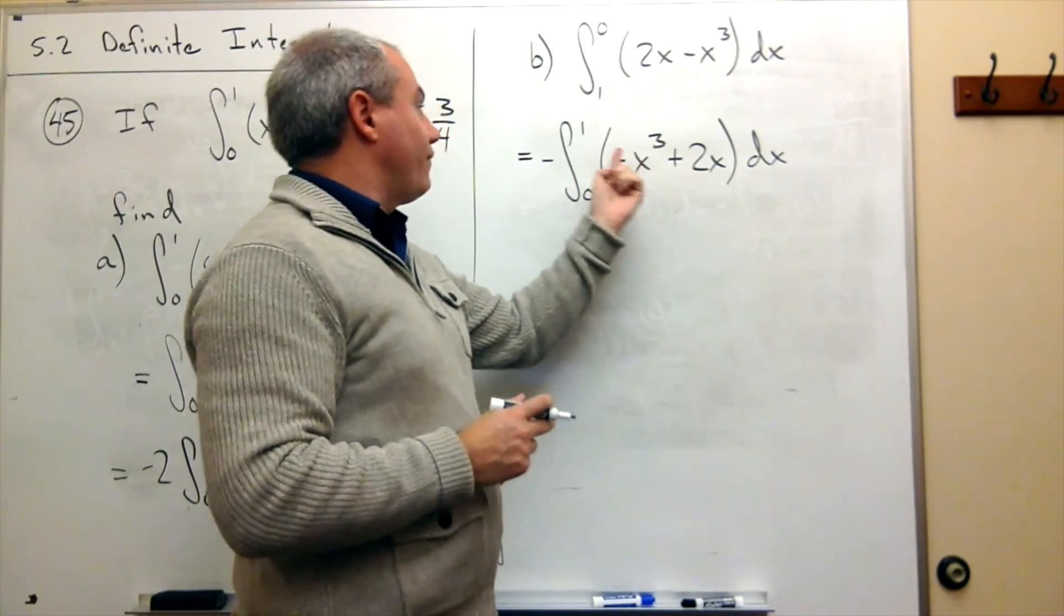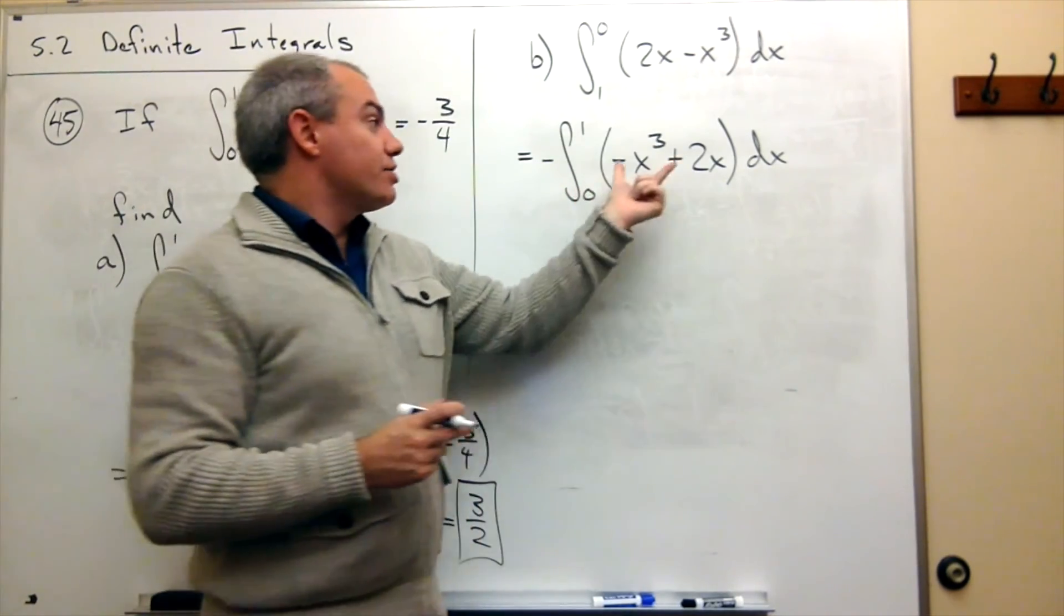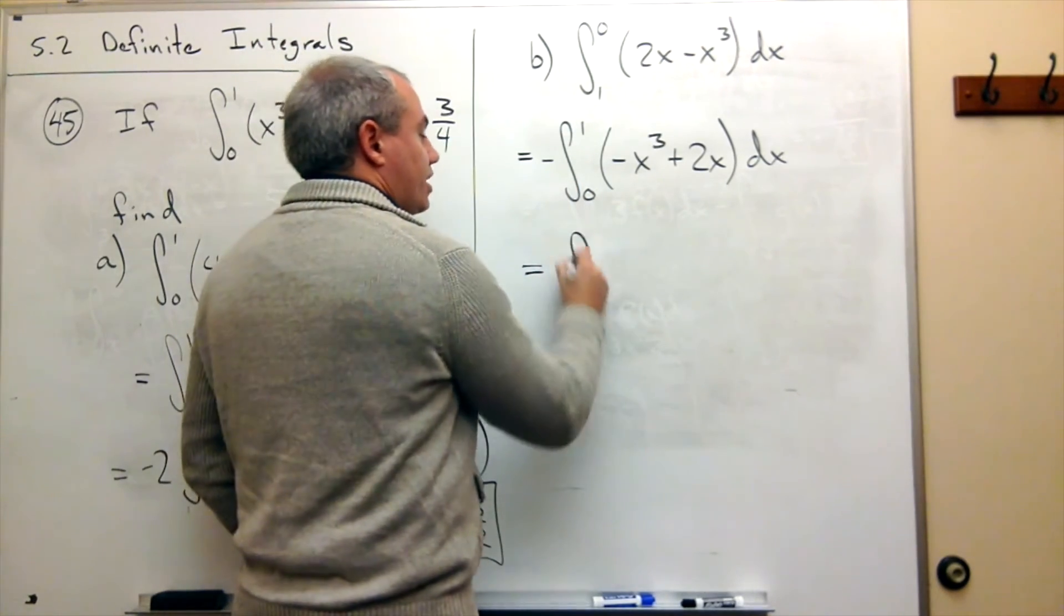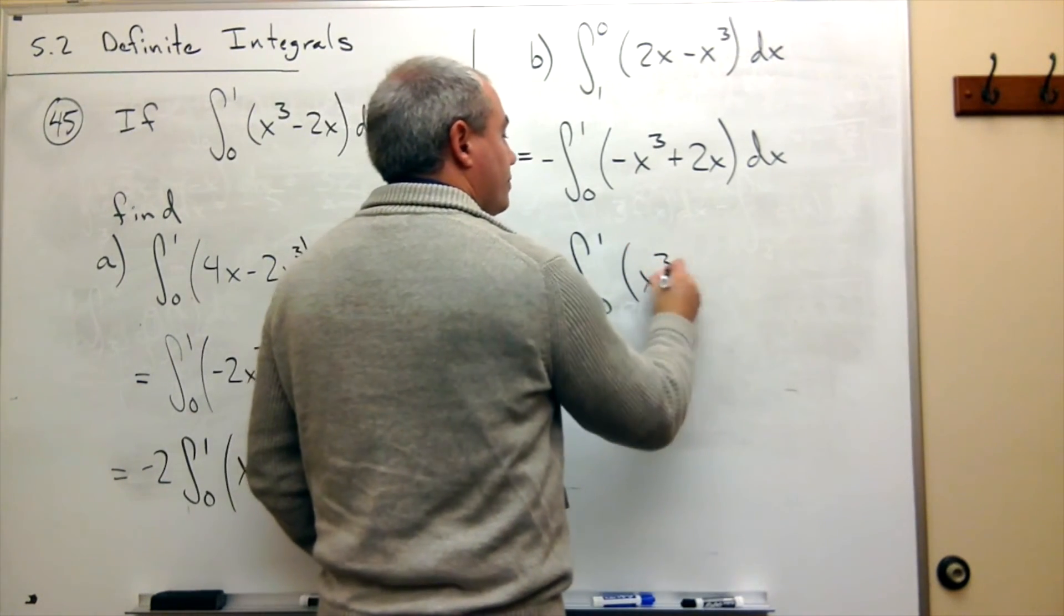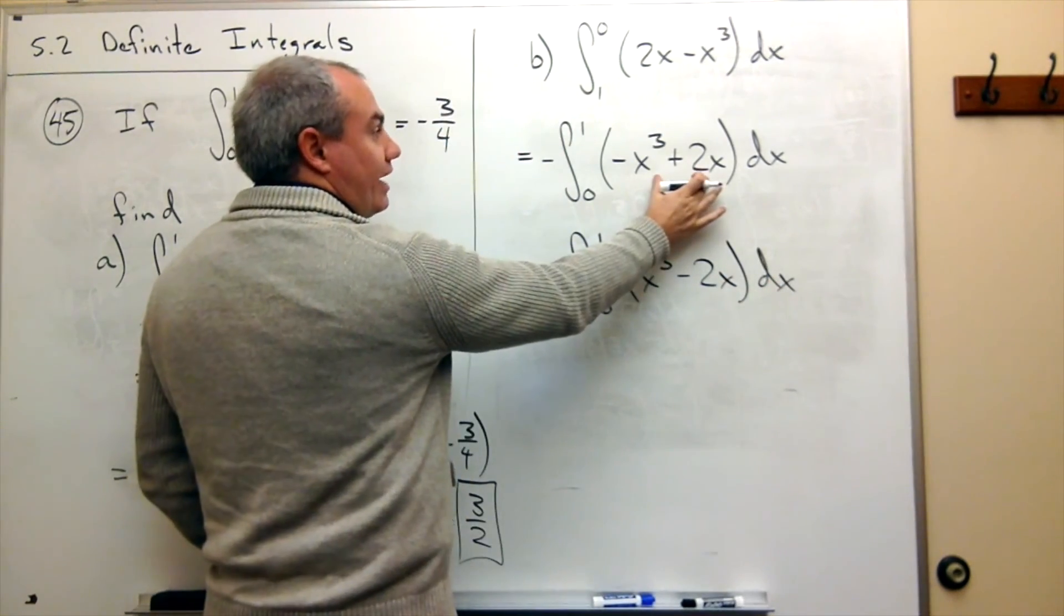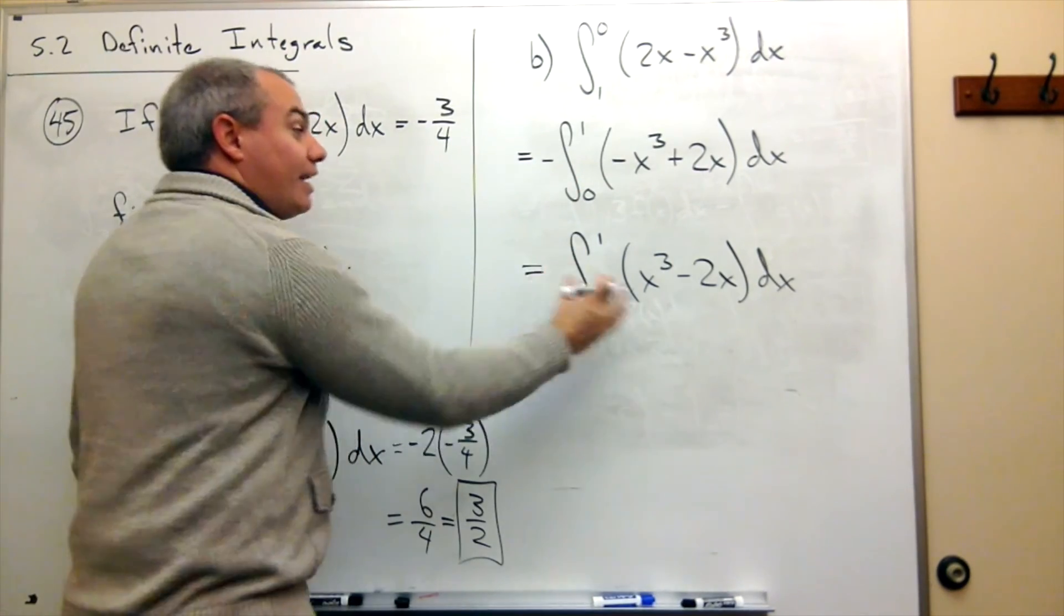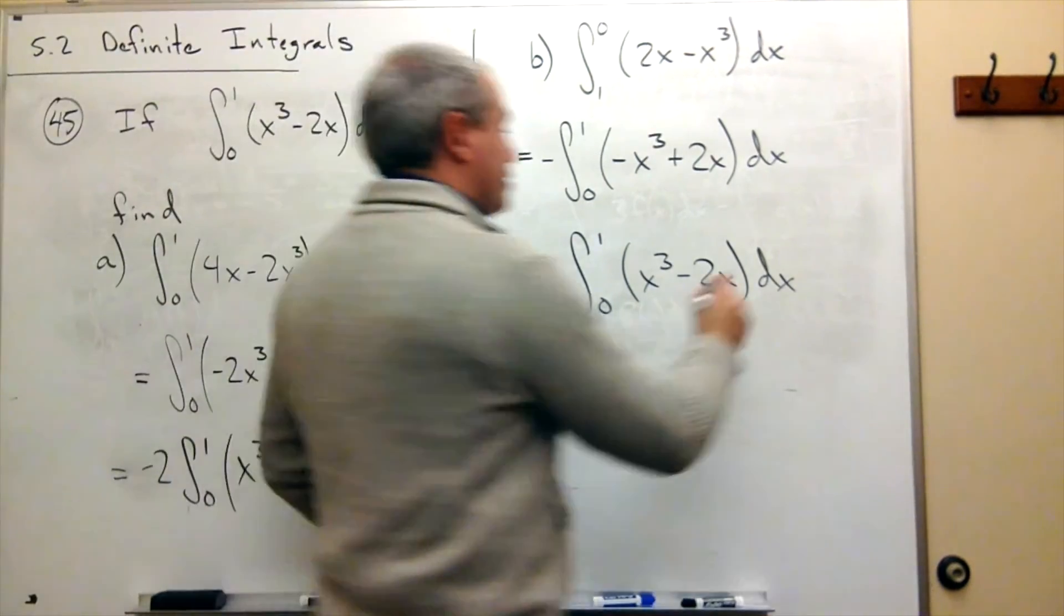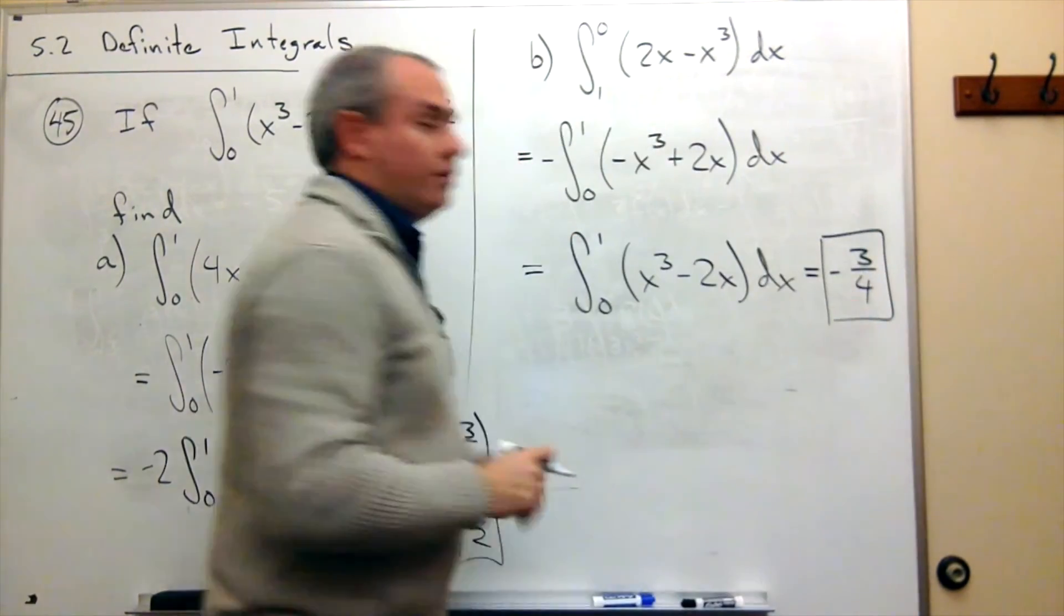So if I factor out a negative 1, I could factor it out of the parentheses, I could factor it all the way out of the integral sign. So that negative is going to come out and cancel the negative that's already out there. So I'm just going to end up with the integral from 0 to 1 of x cubed minus 2x dx. So I factored out a negative 1, it came all the way out here, canceled this negative, so I get a positive. Now I have this guy, but that's exactly what I started with. And so the answer is negative 3 fourths, and we're done.